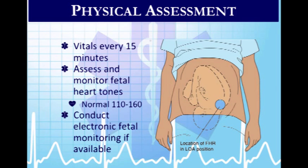For fetal heart tones, you need a handheld Doppler. The diagram shows common locations — going side to side on the lower abdomen. The key is to feel mom's pulse at the same time you're listening so you can differentiate between her heart rate and the fetal heart rate. We're looking for a rate between 110 and 160 to be considered normal.